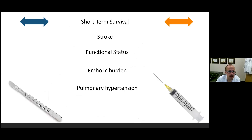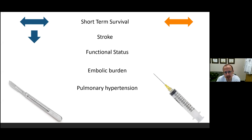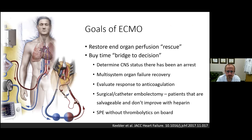Trying to minimize the number of patients who progress to chronic disease has value. Comparing surgical therapy versus thrombolytic therapy: short-term survival is about equivalent, there is reasonable evidence for decreased risk of stroke, perhaps improved functional status, less embolic burden, and less pulmonary hypertension — albeit with overall poor quality data.